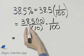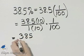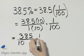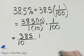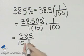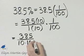Let's now go ahead and simplify. This times 10 is 385. I have 1 times 10, which is 10, and then I still have times 1 over 100. I'll write it in the denominator. This times 10 times 1 is 385, and then I have 10 times 100.